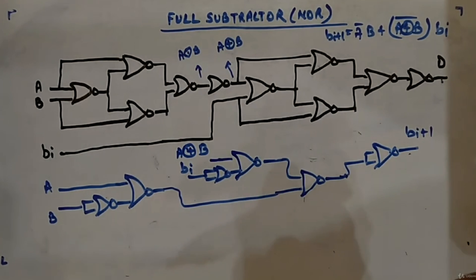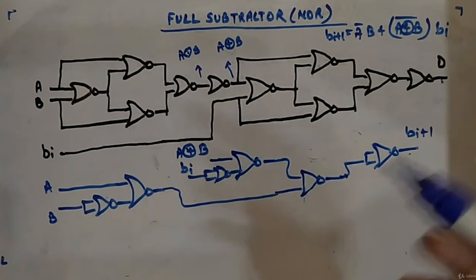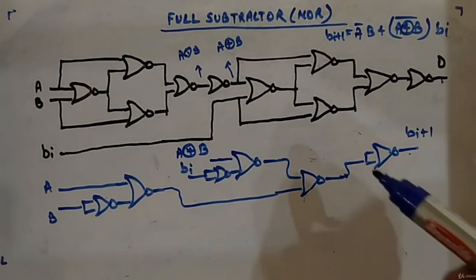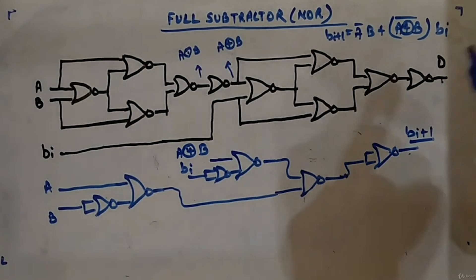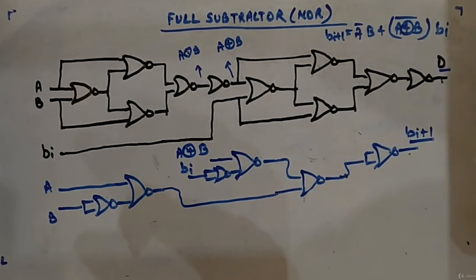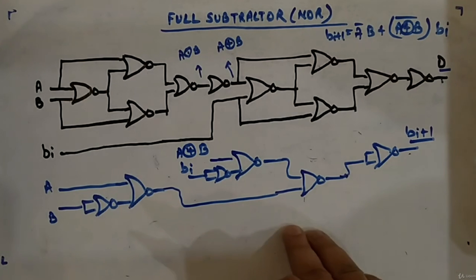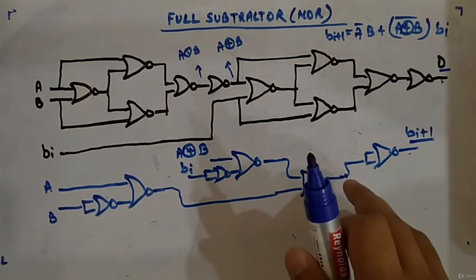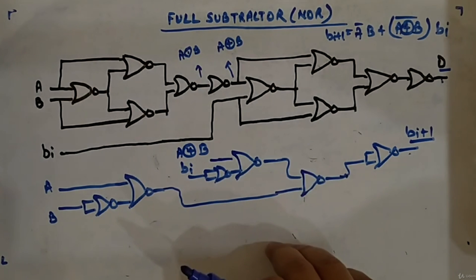Hopefully you've got the way to design using NOR gates. As you can see, there are a lot of gates required, so it is better to go with NAND implementation for full subtractor as well. That is how you design the borrow output and difference. We have now completed all adders and subtractors - full adder, full subtractor, half adder, half subtractor - using universal gates and basic gates.